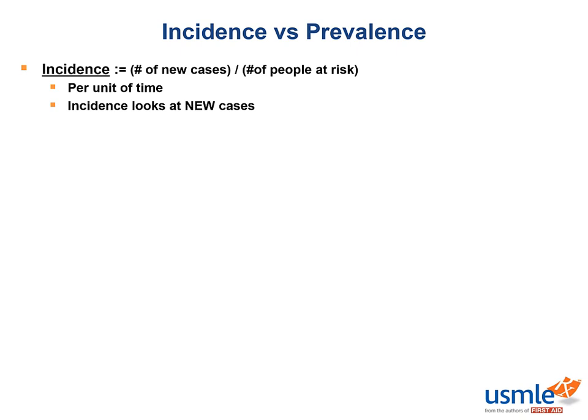Thus, incidence describes new cases that occur in a time period. When calculating incidence, people who are not at risk for acquiring the disease are omitted. This includes people currently with the disease, as well as people previously with the disease for conditions that cannot be acquired multiple times.